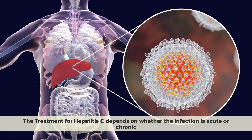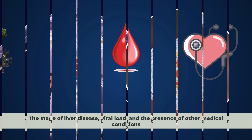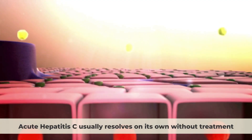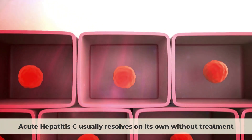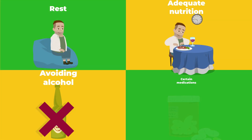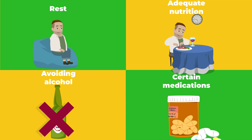Treatment. The treatment for Hepatitis C depends on whether the infection is acute or chronic, the stage of liver disease, viral load, and the presence of other medical conditions. Acute Hepatitis C usually resolves on its own without treatment; however, rest, adequate nutrition, and avoiding alcohol and certain medications that can damage the liver are recommended during this phase.